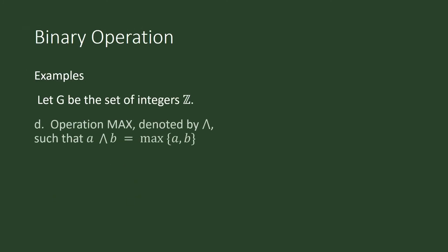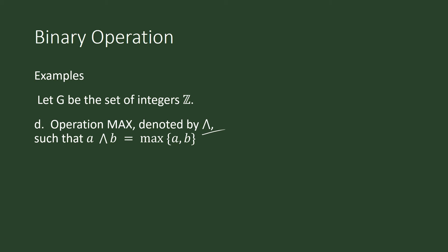Similarly, from the operation min we can produce an operation called max, using a corresponding symbol. A max b is equal to the maximum — it is equal to the larger of the two integers.